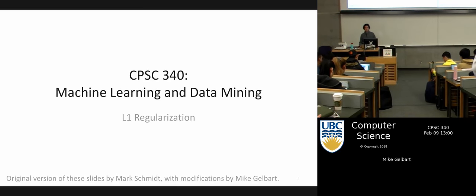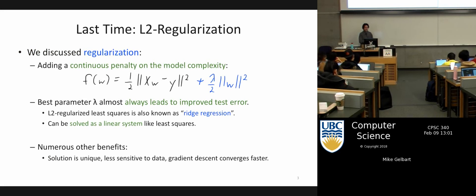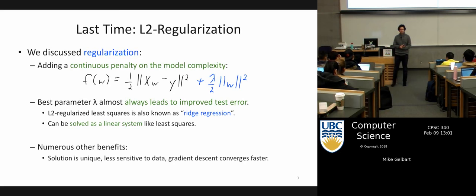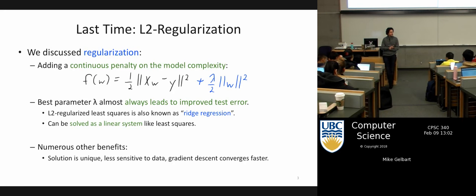Today we'll be continuing the discussion of regularization and talk about a different type. Last time we talked about regularization, which was this idea of putting a complexity penalty into our loss. We talked about L2 regularization, meaning we added the two-norm of the weight vector to the loss. Today we want to talk about the implications if we change that to a one-norm.